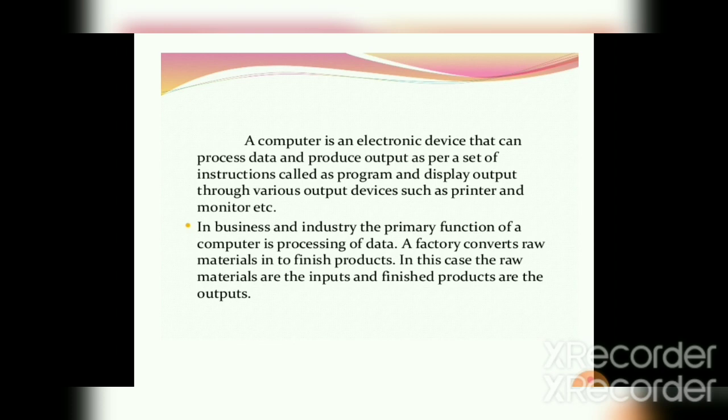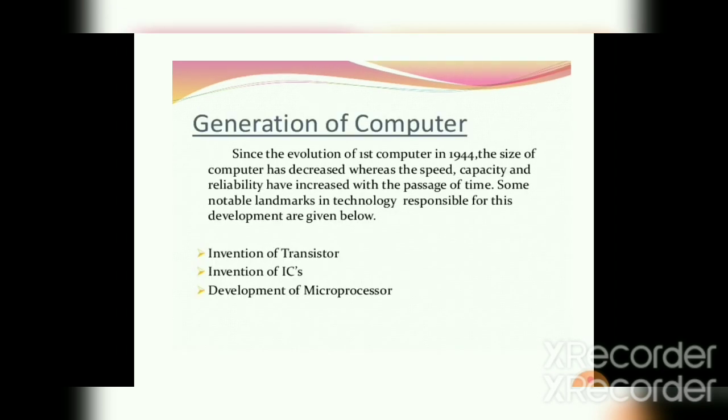Now let us see the first generation of computers. The evolution of computers has started in the year 1944. As time went on, the size of computers decreased and the speed, capacity, reliability — reliability means trust — and performance of computers increased.